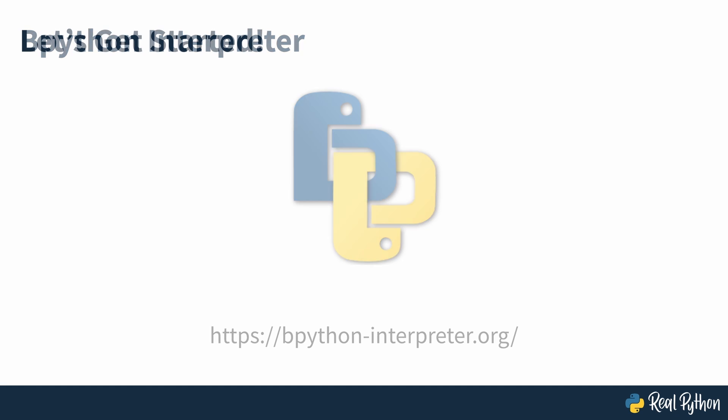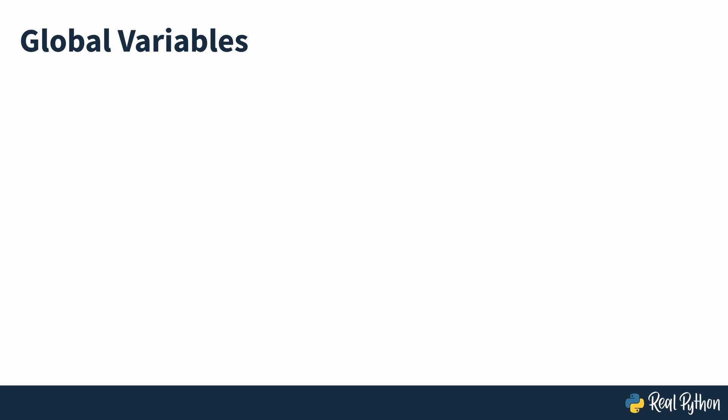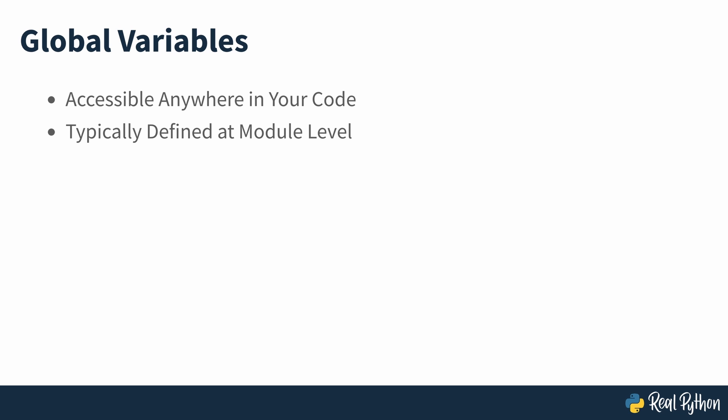So now you know what's going to be covered, let's get started. Global variables are those that you can access and modify from anywhere in your code. In Python, you'll typically define global variables at the module level, so the containing module is their scope.